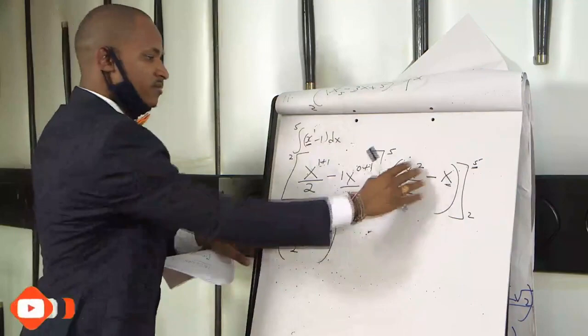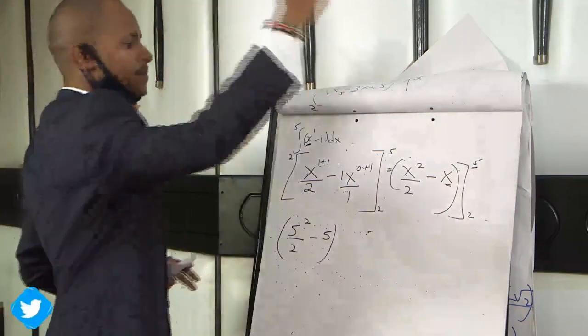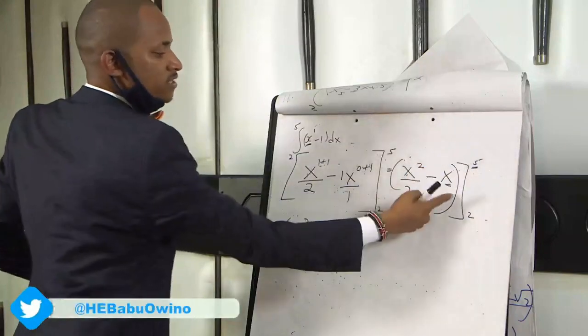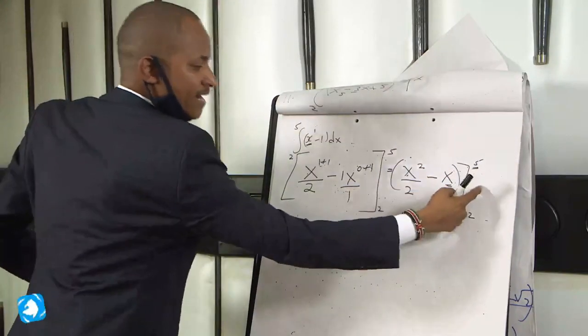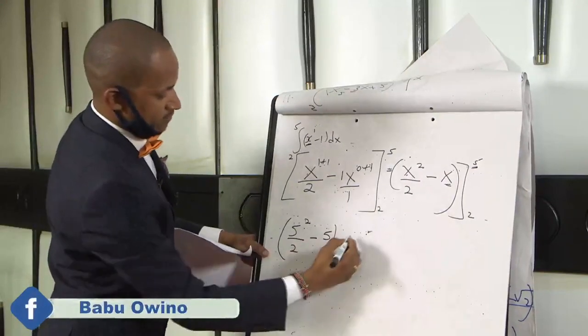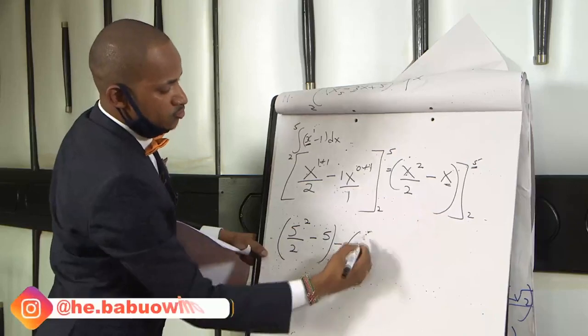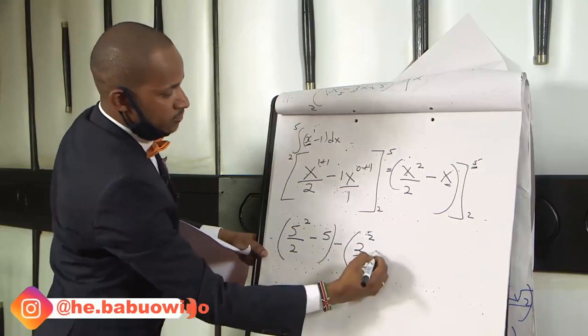Then this value that you get you subtract the lower limit. We have upper limit and the lower limit. So the upper limit is 5 into these values minus 2 into these values. Minus you replace 2 here. So it becomes 2 squared divided by 2 minus 2.